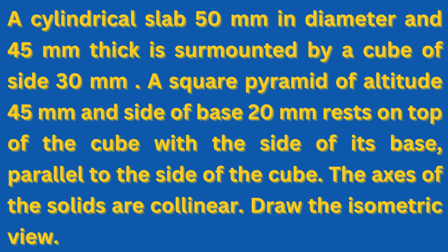For the cylinder, the base diameter is equal to 50 mm and height is equal to 45 mm. Above this, a cube is placed of 30 mm edge. A square pyramid of altitude 45 mm and side of base 20 mm rests on top of the cube, with the sides of its base parallel to the sides of the cube. The axes of all solids are collinear, so all solids are placed centrally one above the other. Draw the isometric view.